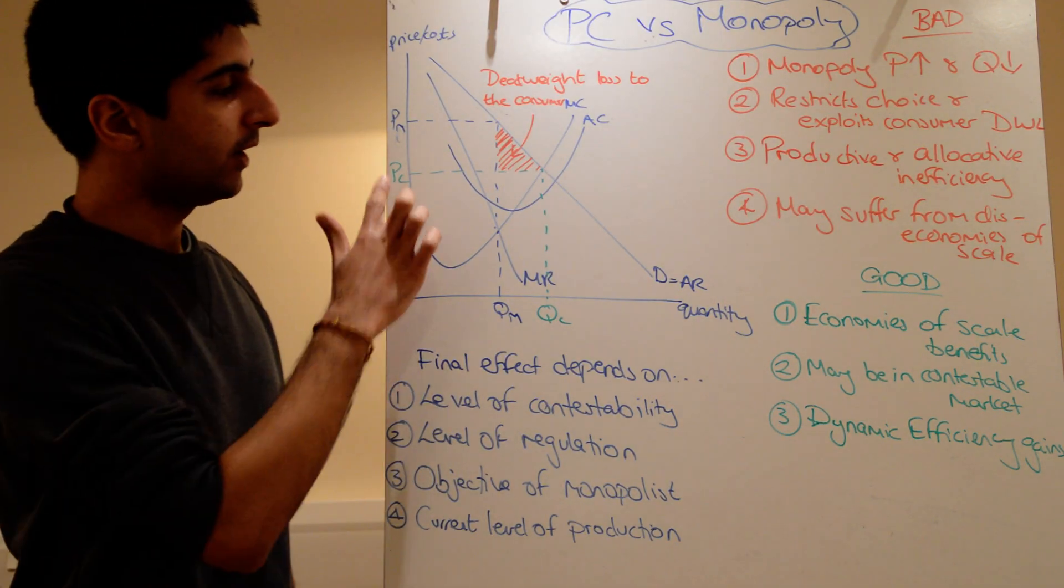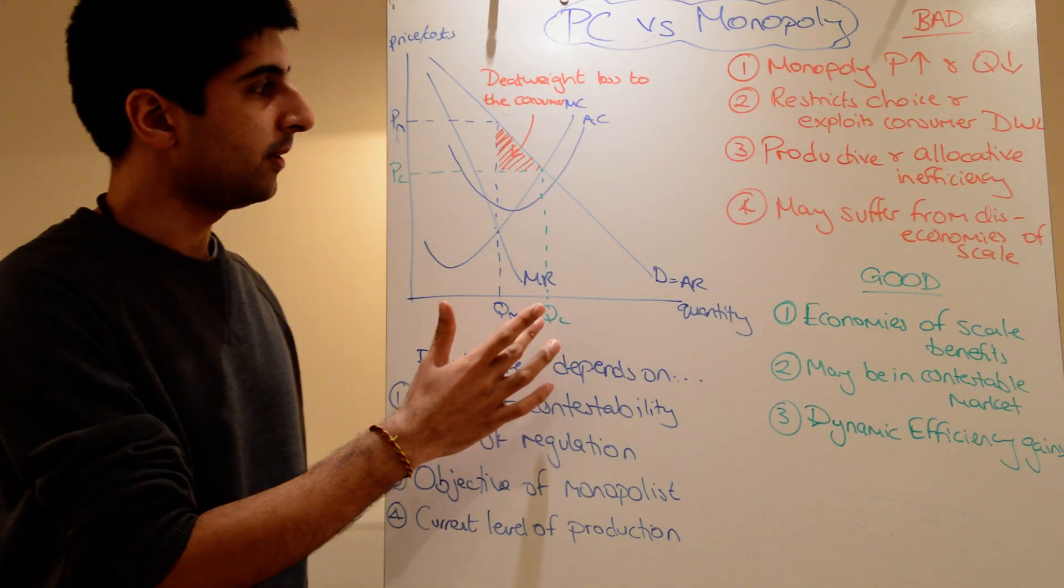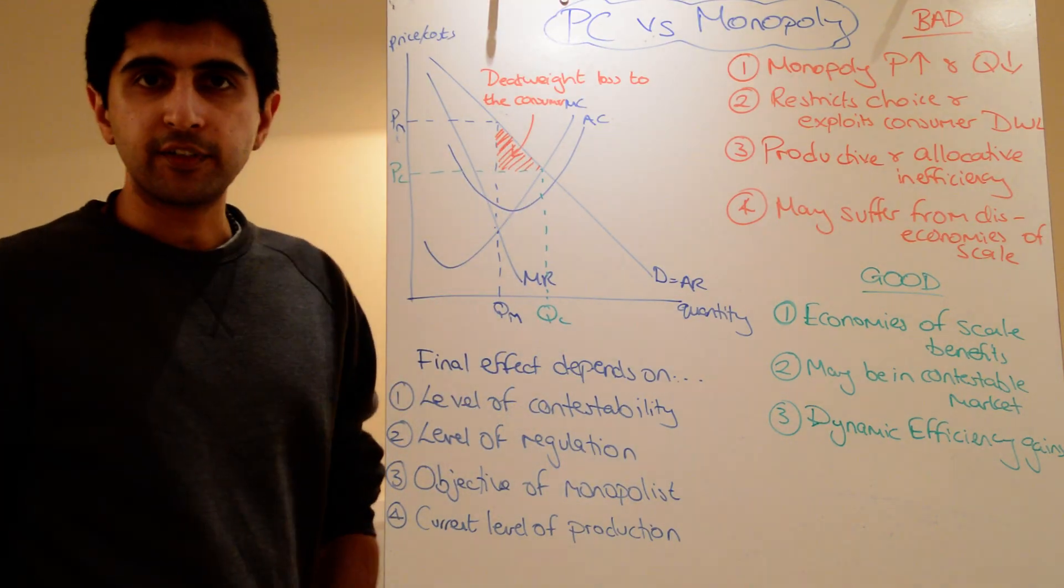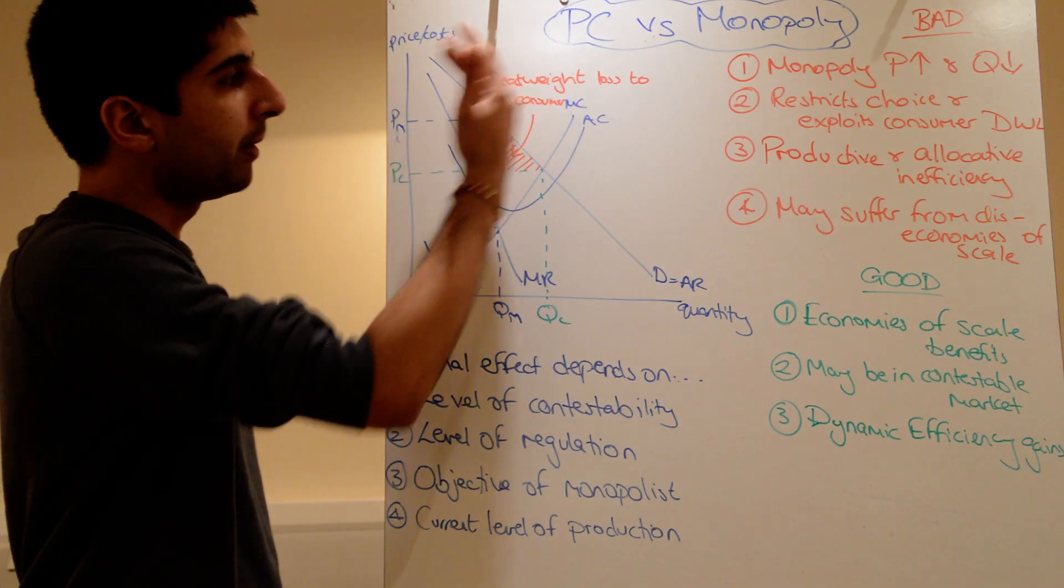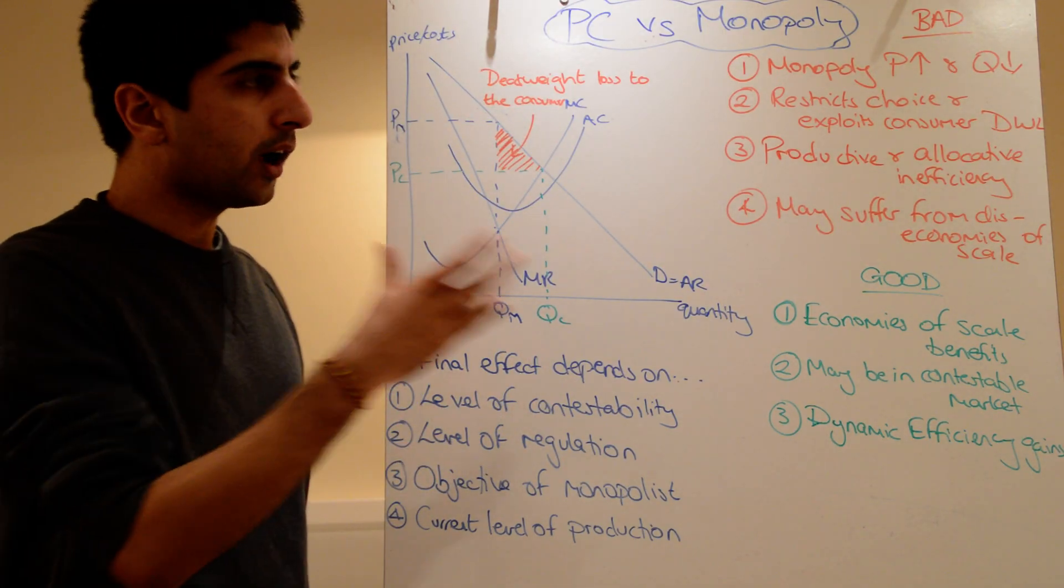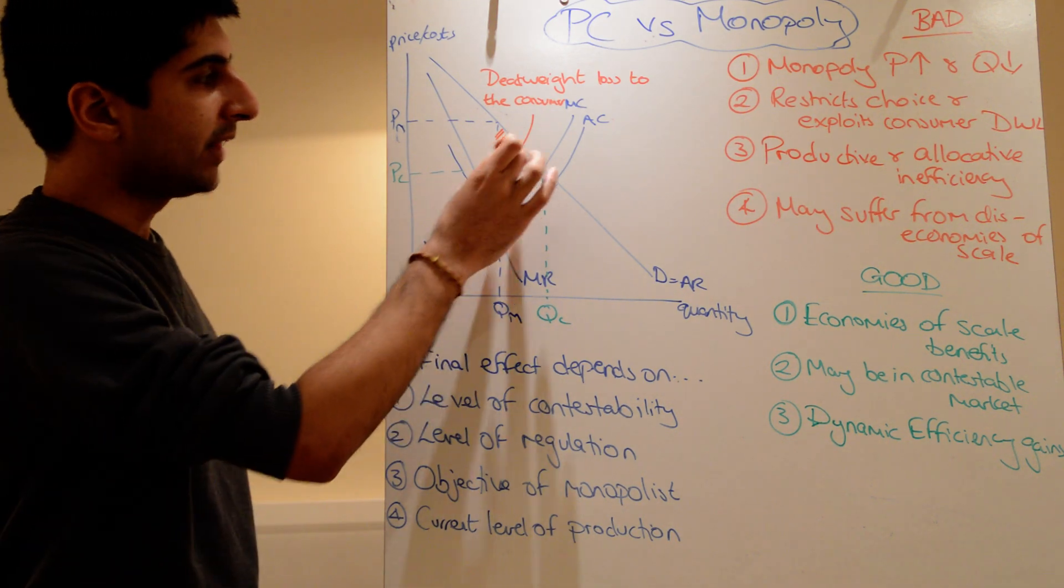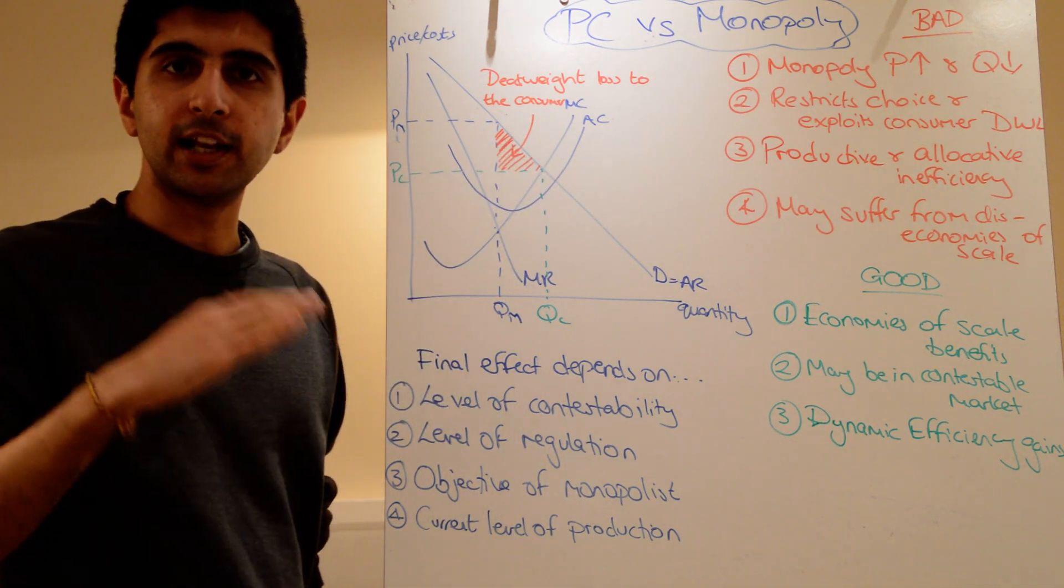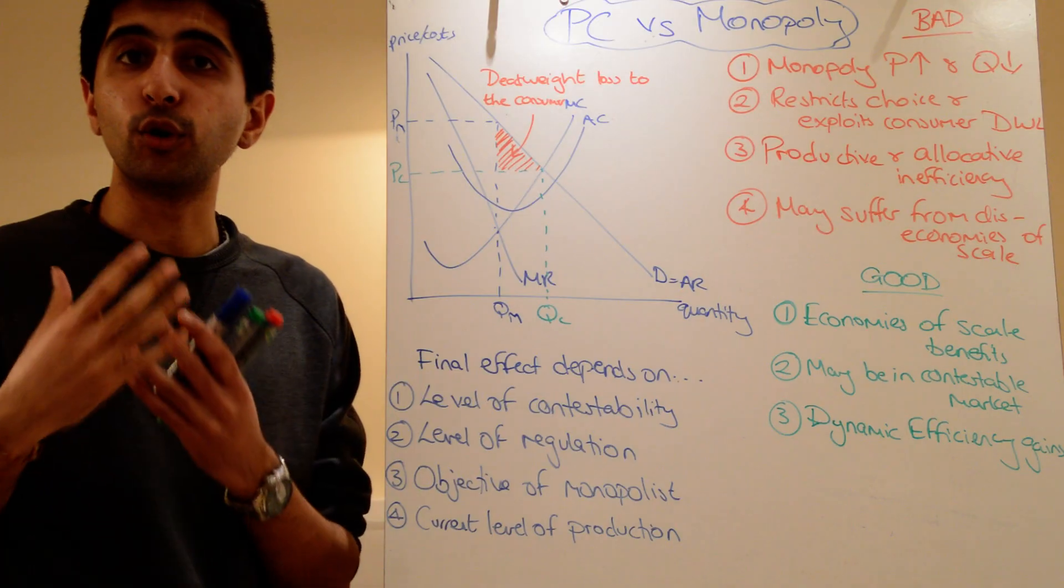The way we know that, if you start at PC and QC, well, what's the area of consumer surplus? It's the area above the price, but below the demand curve. Well, now suddenly moving to PM, just isolated consumer surplus, that red area has been completely lost. It's a deadweight loss. It's not recovered at all.